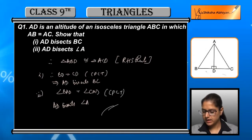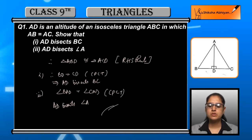And the second part that we have to prove is that AD is bisecting angle A. So we can say that angle BAD is equal to angle CAD, and this time we can say that AD is bisecting angle A.